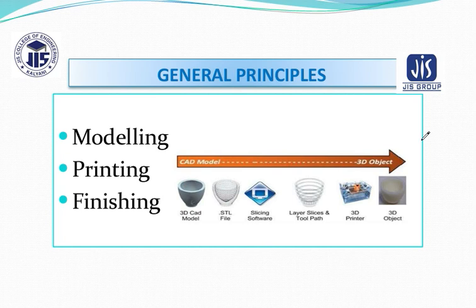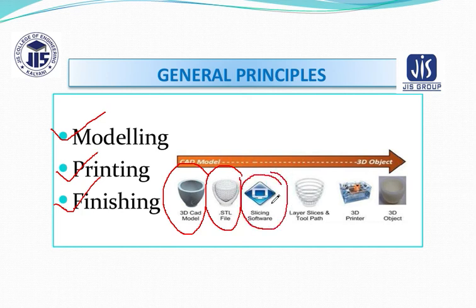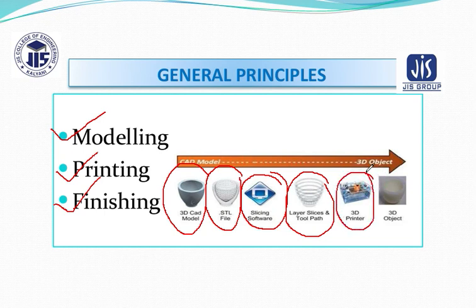What are the general principles of this particular process? First is modeling, second is printing, and finally it is finishing. For modeling, first you create a 3D CAD model, then convert the CAD file into an STL file, then with the help of slicing software you slice the model — here you can see layer, slice, and toolpath have been mentioned. With the help of a 3D printer, you deposit the material layer by layer and finally obtain your desired output — the 3D object.